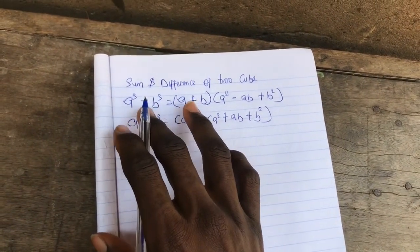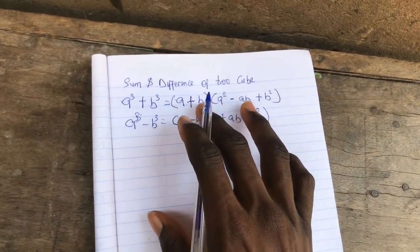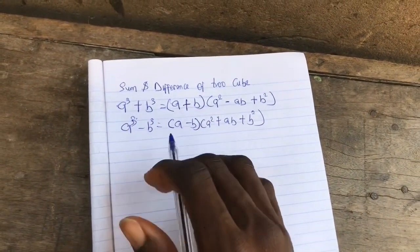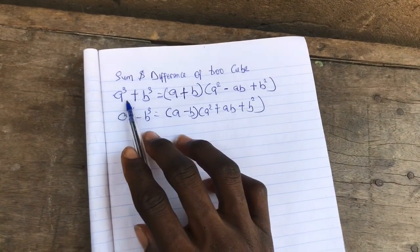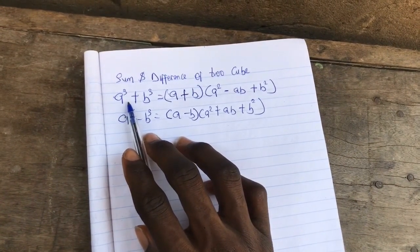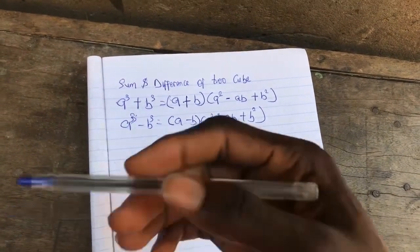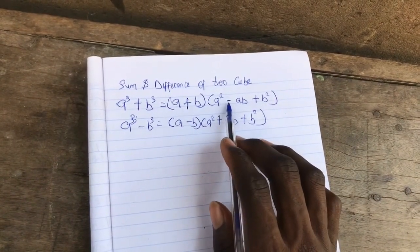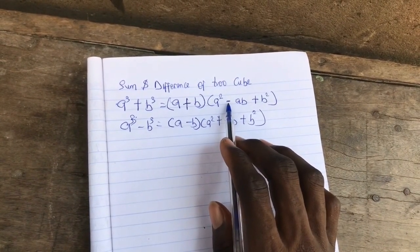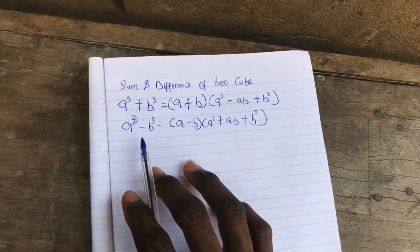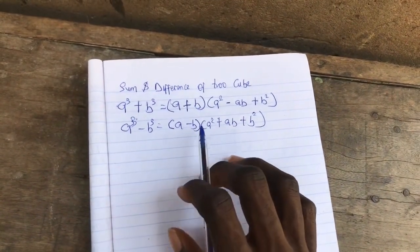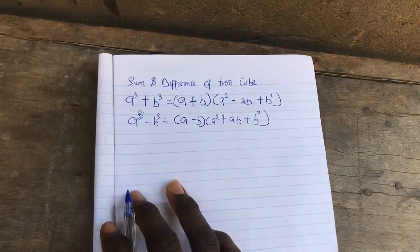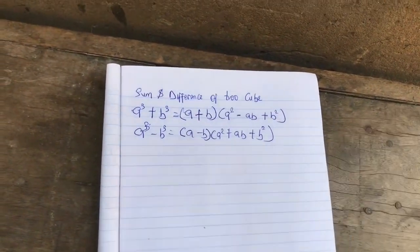So a³ + b³ = (a + b)(a² - ab + b²). What we need to differentiate is that if it's the sum, it starts with plus, then further down there will be a negative sign in between. For the difference, you start with negative, then the rest is positive. That's a little trick for remembering that.